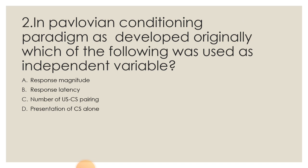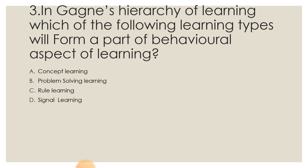In the Pavlov conditioning paradigm: A) Response magnitude, B) Response latency, C) Number of US-CS pairings, and D) Presentation of CS alone — where CS is conditioned stimulus and US is unconditioned stimulus.